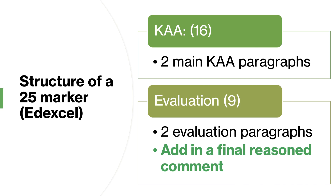I thought a little bit about the structure of how to build a 25 marker. It seems that lots of students haven't really had much practice writing a 25 marker. Essentially, for Edexcel you have to build really only five paragraphs: two KAA paragraphs — knowledge, analysis, application — evaluate both of those points, and then add in a final reason comment at the end. So essentially a five paragraph answer, hopefully with a diagram or two in there as well. Good chains of reasoning and I think you'll be in great shape. You don't necessarily have to write an excessively long answer.